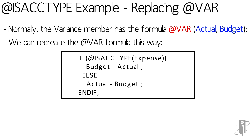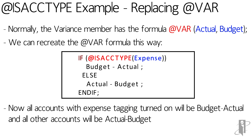So let's say we really didn't want to use the atvar function, or we had something else we wanted to check for. We're going to recreate the atvar function by saying isAccountType expense, in which case we'll do budget minus actual. In all other cases we're going to do actual minus budget.